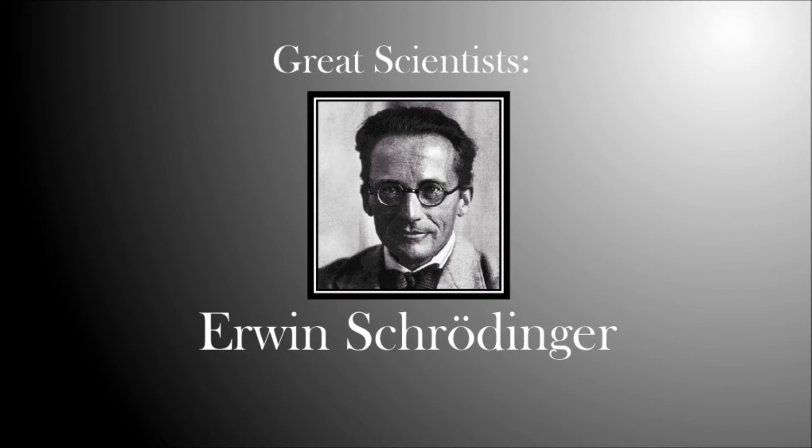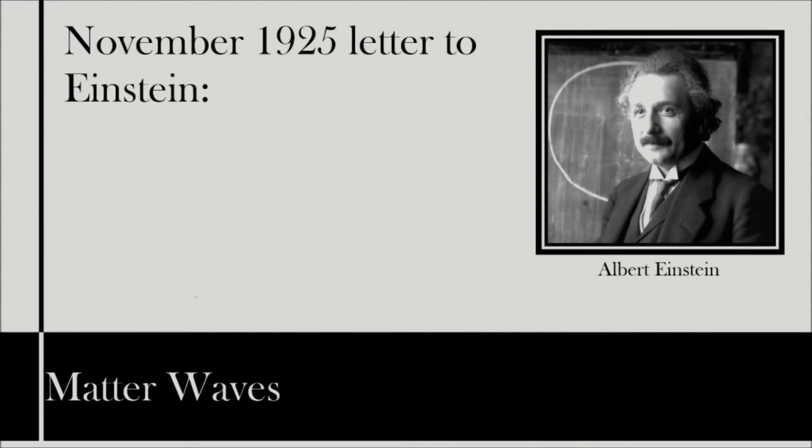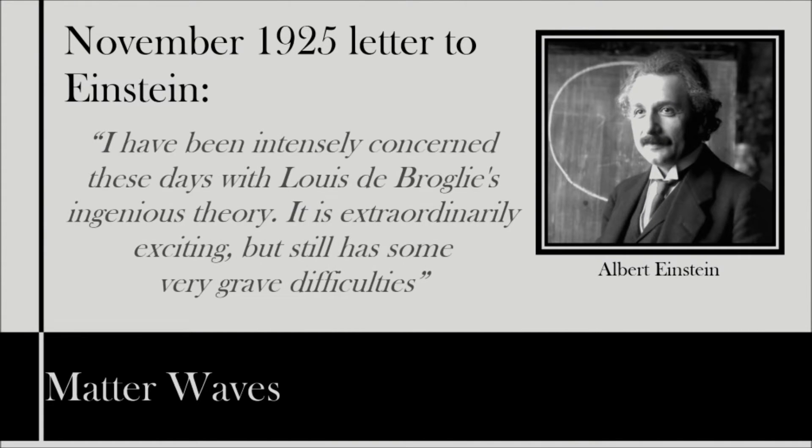At the end of the last part, we left Schrödinger reading the thesis of Louis de Broglie, wherein de Broglie outlined his theory of electron waves which would lead to the idea of matter waves. In a November 1925 letter to Albert Einstein, Schrödinger wrote,